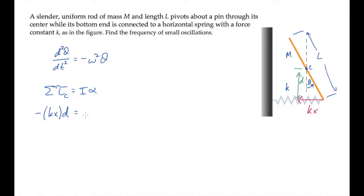And that equals moment of inertia for a thin rod about its center, 1/12 mL squared, times alpha, the second time derivative of the angle theta.